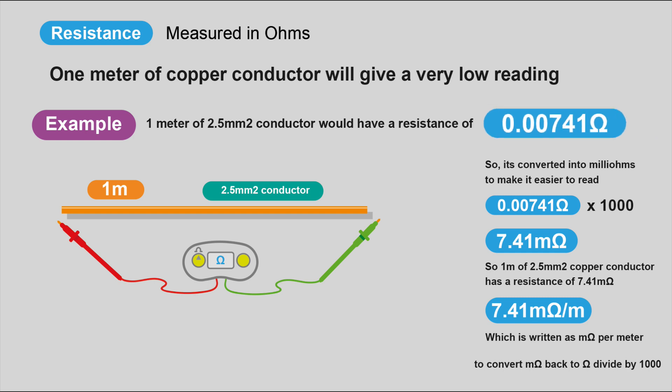That's quite a long number to write down, so we get rid of the noughts. We convert it into milli-ohms to make it easier to read. So we times that number by 1,000 and we get 7.41 milli-ohms. So one meter of 2.5 millimeters squared copper conductor has a resistance of 7.41 milli-ohms per meter.